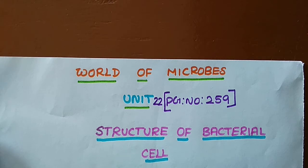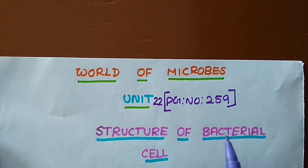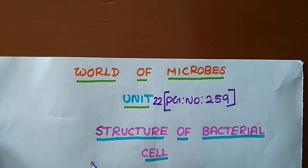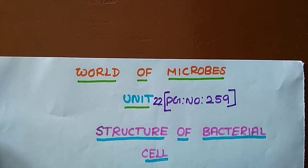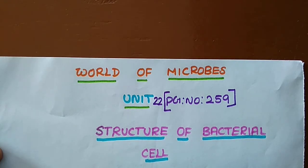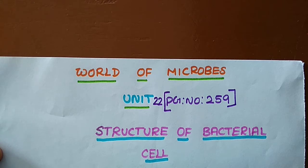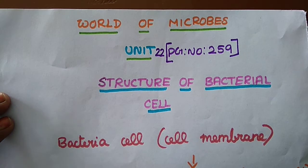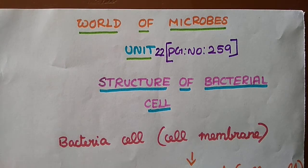For what we done yesterday, we have seen the shapes and types of bacteria. So in this class we are going to discuss about the structure of a bacterial cell. Bacteria is unicellular, so they are not having any proper organelles. The inside of the cells are covered with the cell membrane.